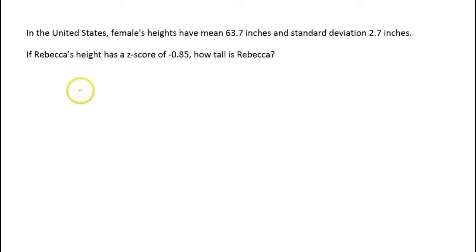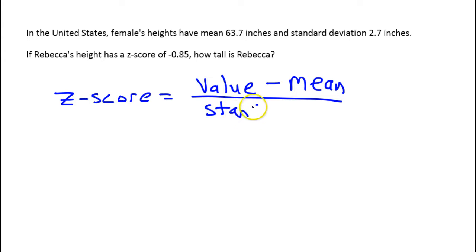Here's the formula for z-score. A z-score is equal to the value of one person minus the mean divided by the standard deviation. You'll see that abbreviated as z equals x minus x-bar divided by sigma. That's the same thing in symbols.